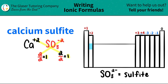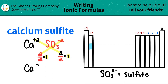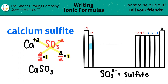So here we go — I just need Ca. I can write the one, but technically you don't really see ones as subscripts. If you only have one, you don't have to write the number. And then comes the sulfite, which is SO₃. I have only one of those as well. So calcium sulfite is just CaSO₃, and that is our final answer.